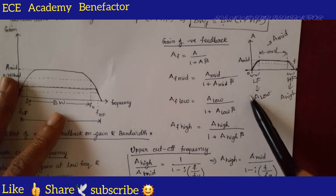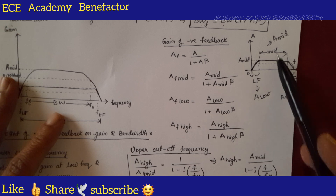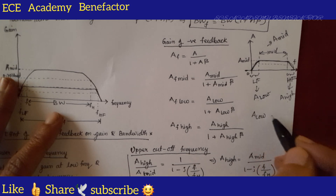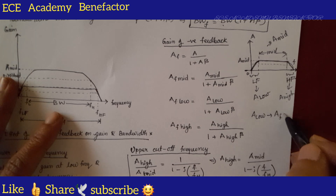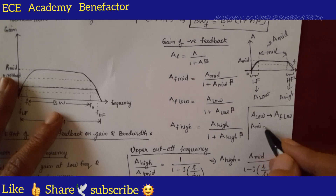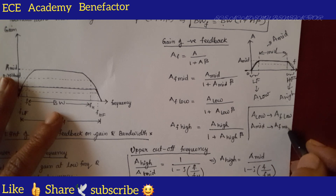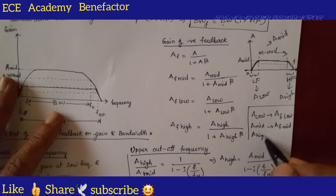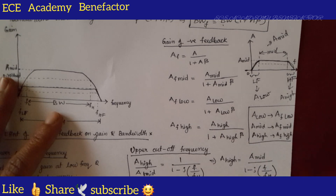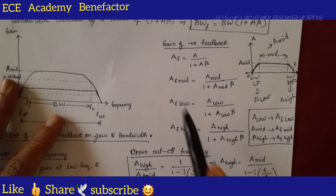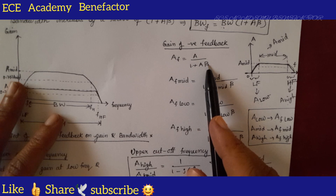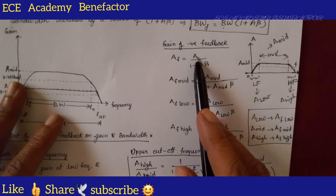This graph is represented in terms of open loop. For closed loop, the gain symbols change accordingly. A_low with feedback is written as AF_low. A_mid without feedback becomes AF_mid with feedback. And A_high without feedback becomes AF_high with feedback. These are the notations we use for open loop and closed loop gain.